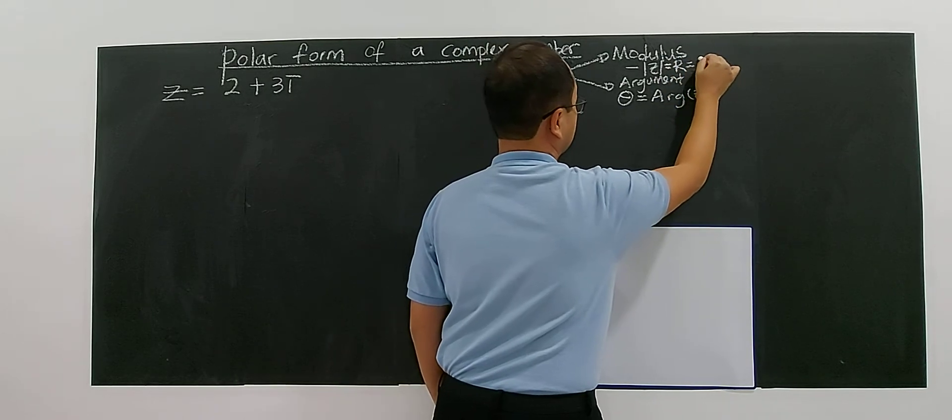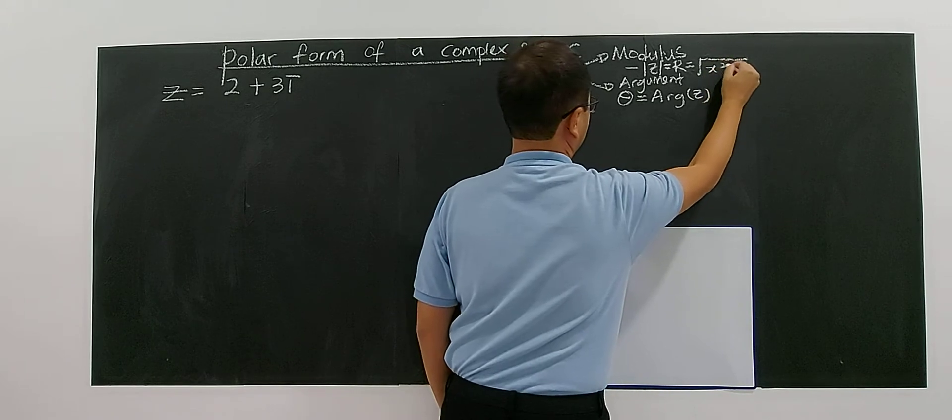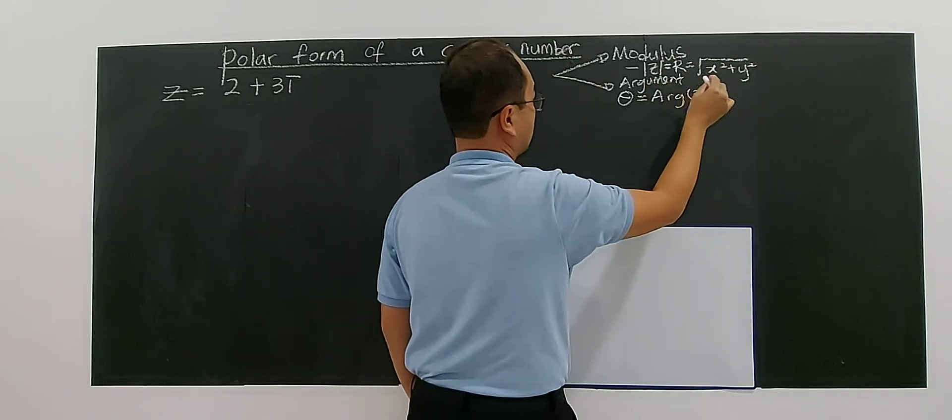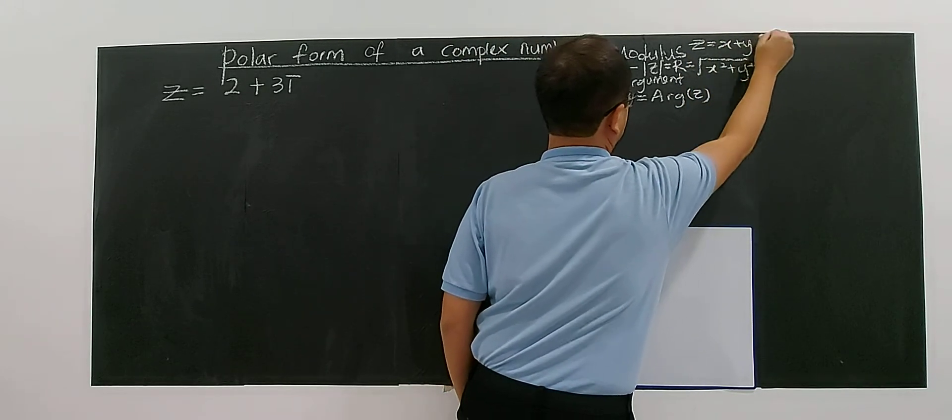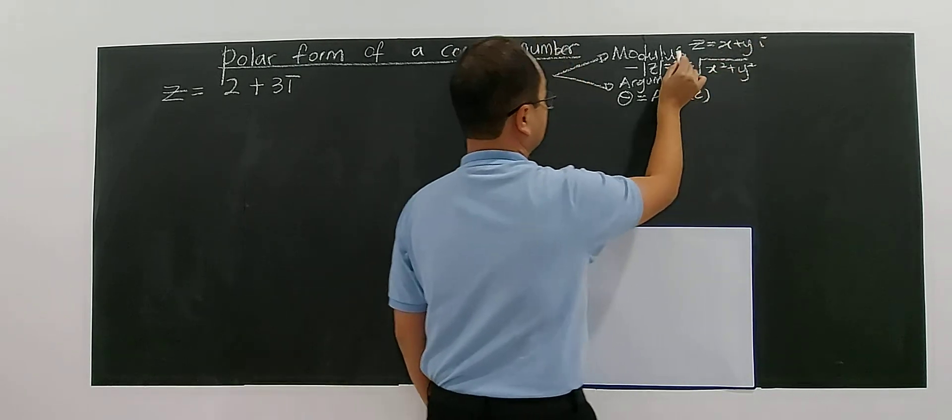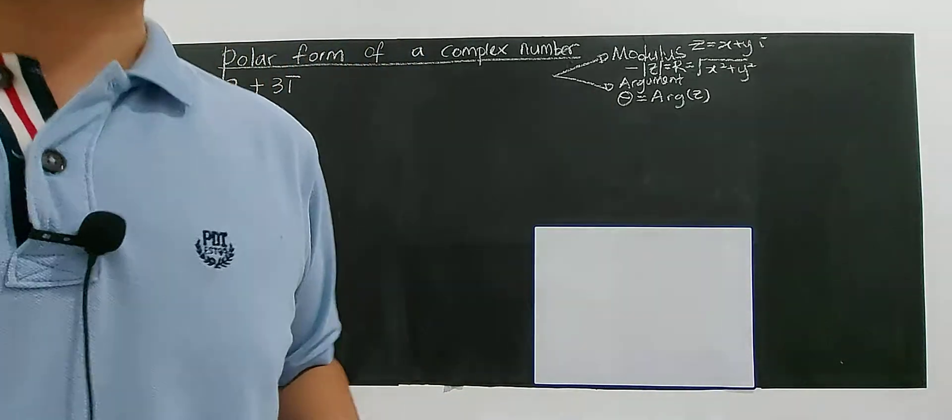The modulus is always the square root of x² plus y². If the complex number is in Cartesian form, already in the form x + yi, then this is the way you find your modulus. But the argument depends on the quadrant involved.